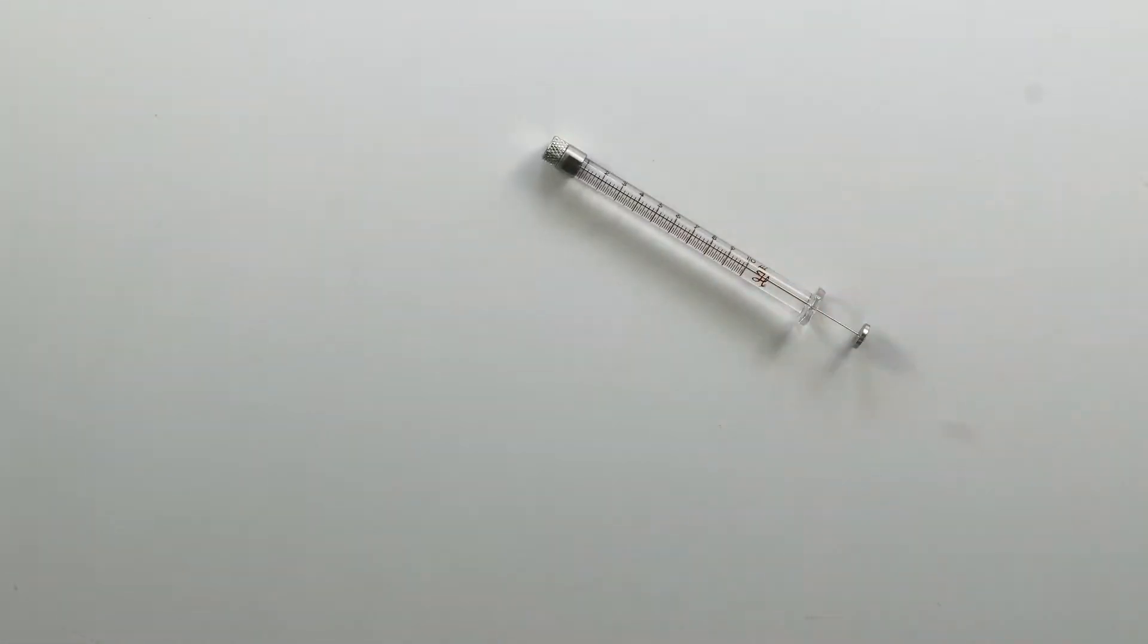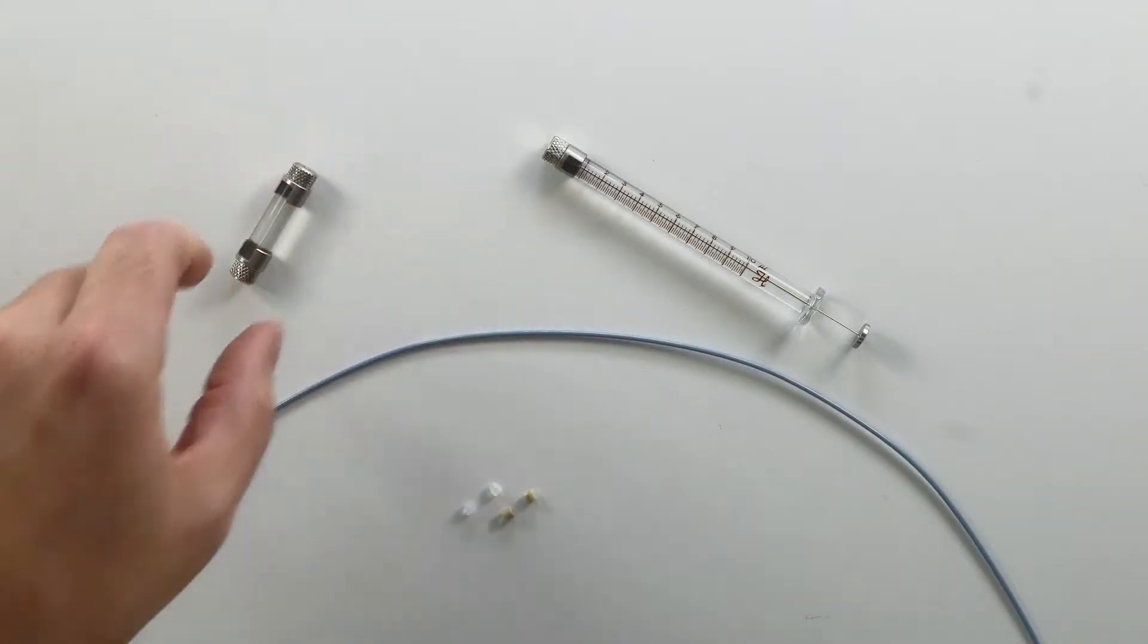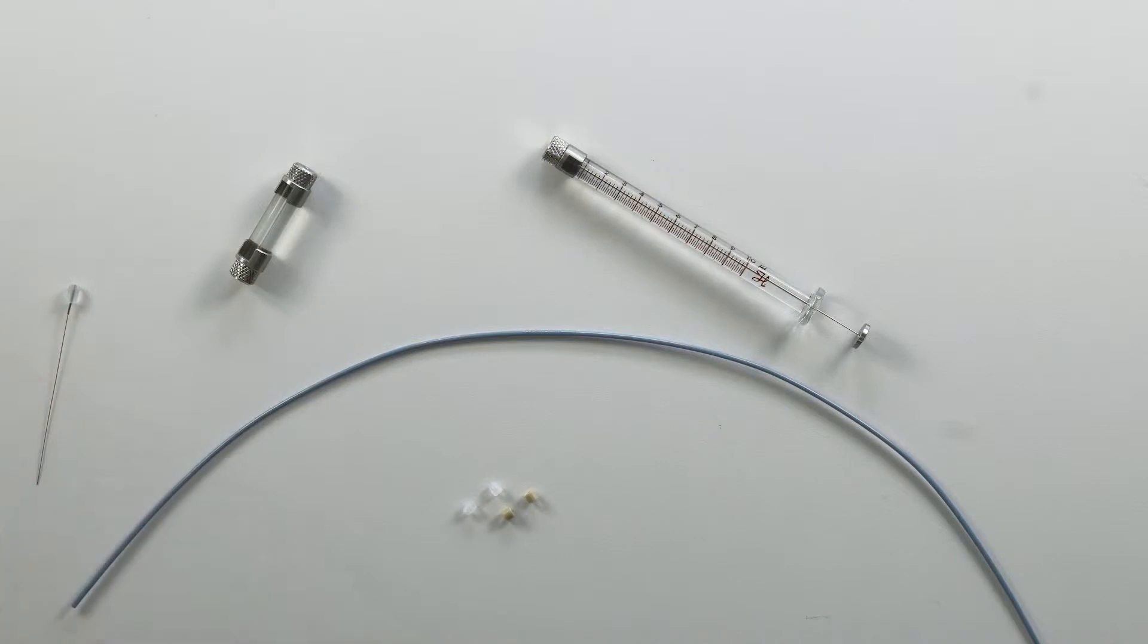For this setup you will need a 100 microliter or smaller syringe with a removable needle, 1/16th of an inch compression fittings, HPLC grade peak tubing, the RN to RN compression fitting, a removable needle of desired gauge and length, mineral oil, and a priming kit.